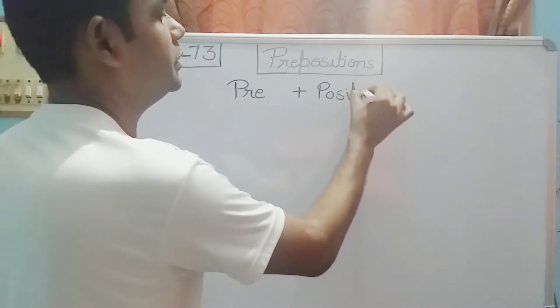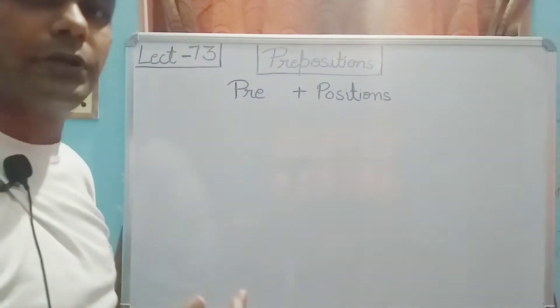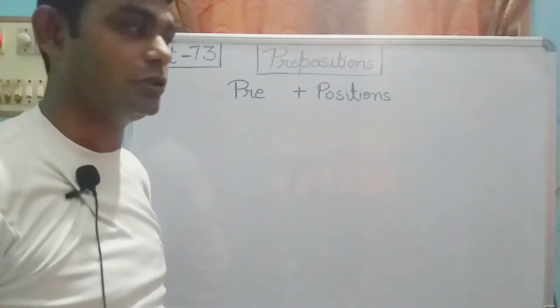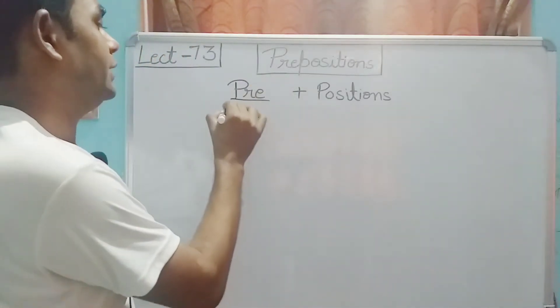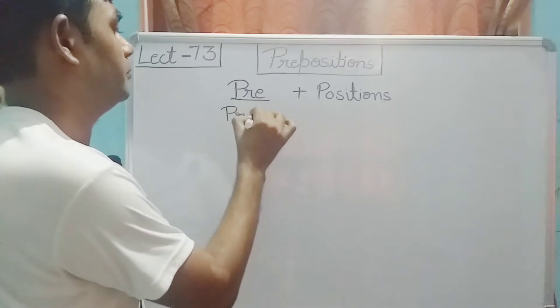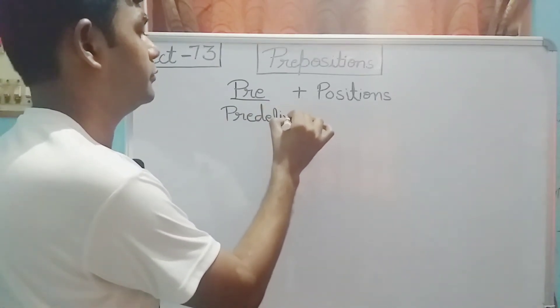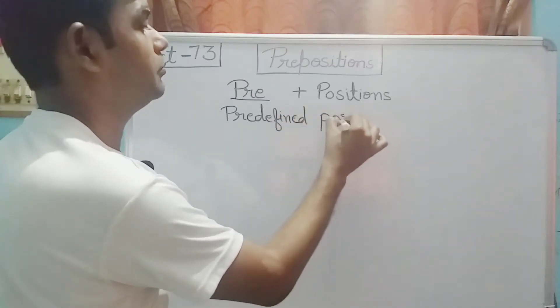Position means location. Koi cheez kis jaga pe rukhi hai? Us ko show karne ke liye hum position ka use karte hai. Or pre means predefined. Predefined positions - that are prepositions.